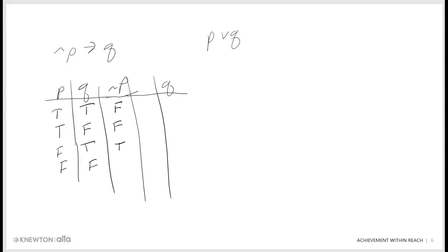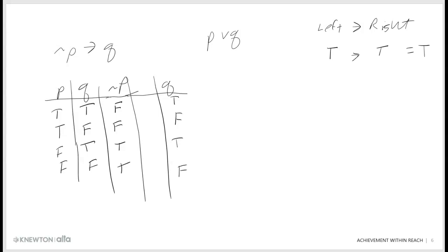Not P goes: false, false, true, true. And then Q — I'm just rewriting column Q — goes: true, false, true, false. Now I have these in the right order. What are the math facts? In the truth table for the if-then, if the left is true and the right is true, the output is true. If the left is true and the right is false, the output is false.